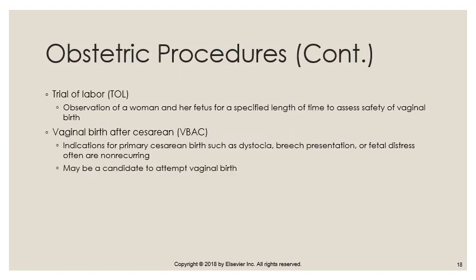Every woman has a trial of labor — observation of the woman and fetus for a specific time to assess the safety of vaginal birth before assuming a cesarean is needed. Vaginal birth after cesarean (VBAC) is especially appropriate when the uterine incision is a low Pfannenstiel (transverse). Indications for a primary cesarean — such as dystocia, breech presentation, fetal distress, or twins — are often non-recurring, making VBAC a viable option.